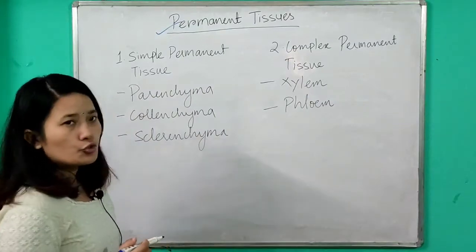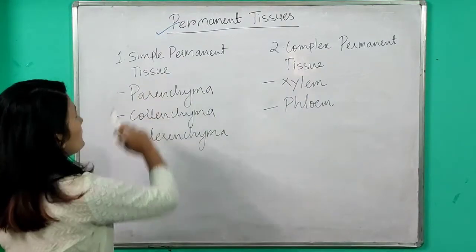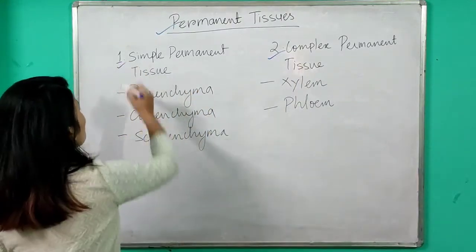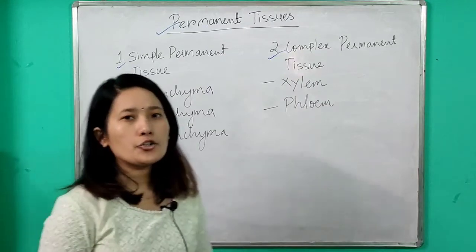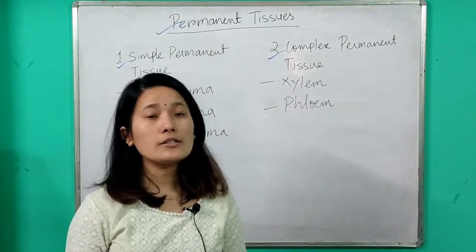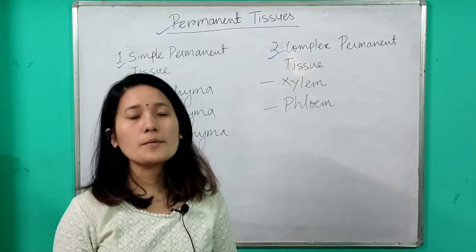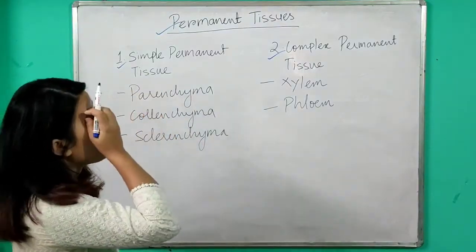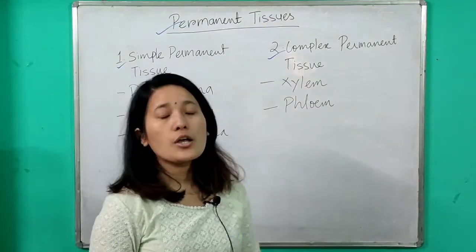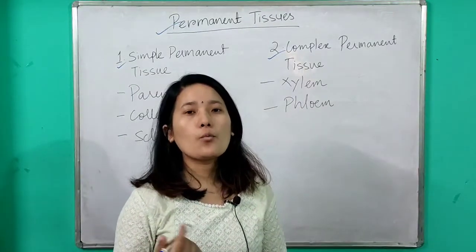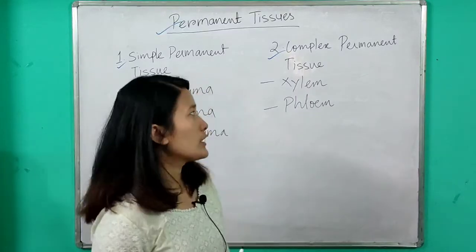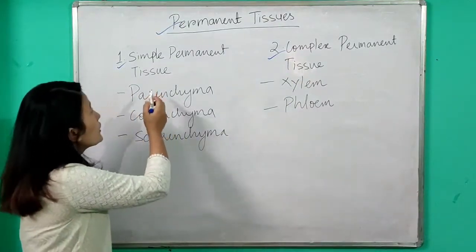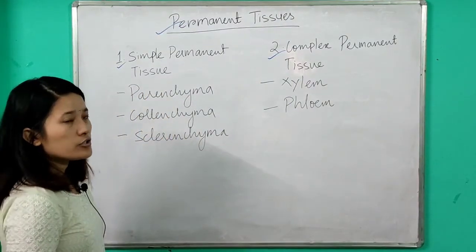Permanent tissue can be divided into two types: simple permanent tissue and complex permanent tissue. Simple permanent tissue is made up of similar or same type of cells. Complex permanent tissue, on the other hand, is made up of more than one type of cells — that's why it is referred to as complex permanent tissue.